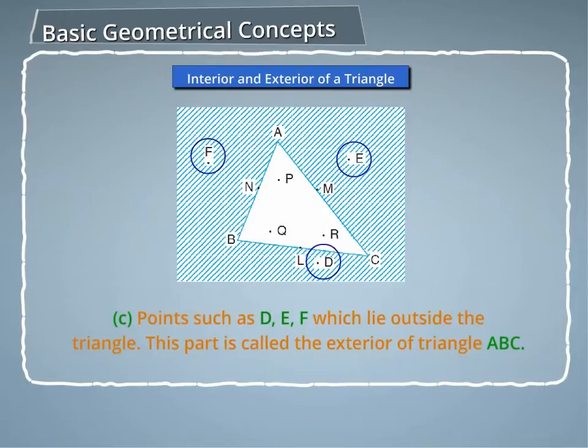Points such as D, E, F which lie outside the triangle. This part is called the exterior of triangle ABC.